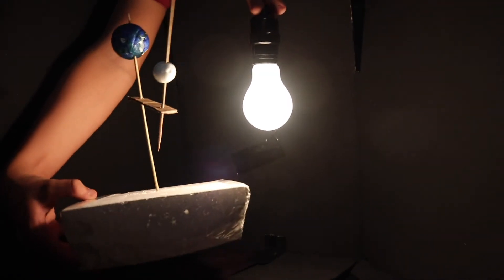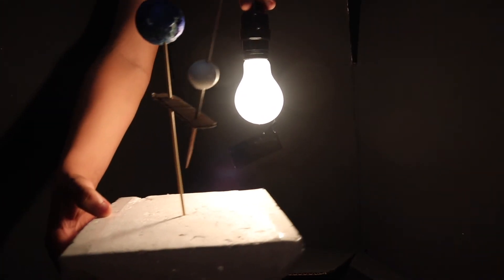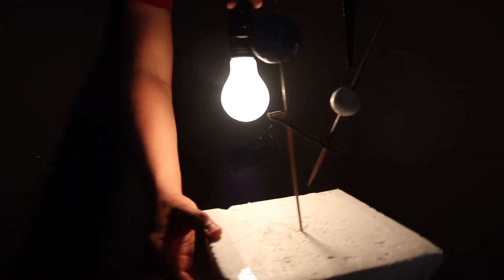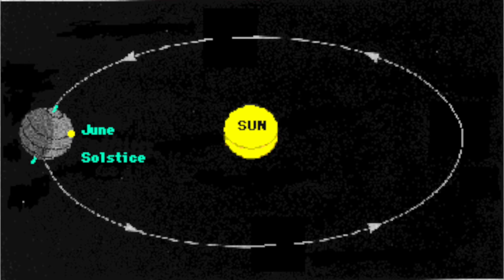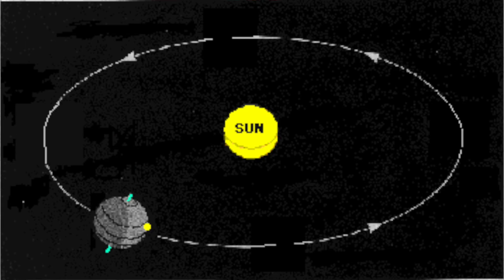The Earth orbits the Sun at a rate of 365.25 days. Just like the phases of the moon, the season is determined by the Earth's position in its orbit.